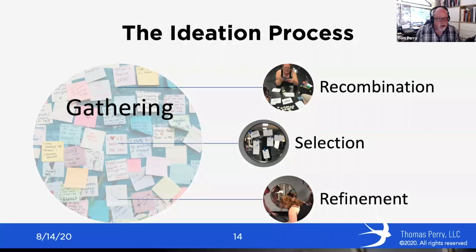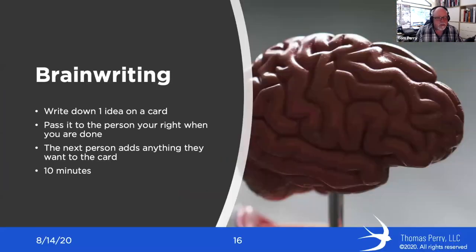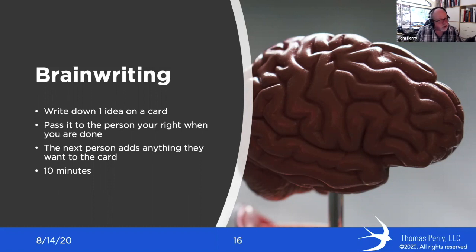Some of the techniques we use for that: brainwriting is one, where everyone writes down a single idea on a card, then passes it to the person to their right when done. That person adds anything they want to the card and passes it on. You continue this activity for about 10 minutes, and these cards gradually accrete all of these varying different kinds of ideas, each inspired by the person previous to them.